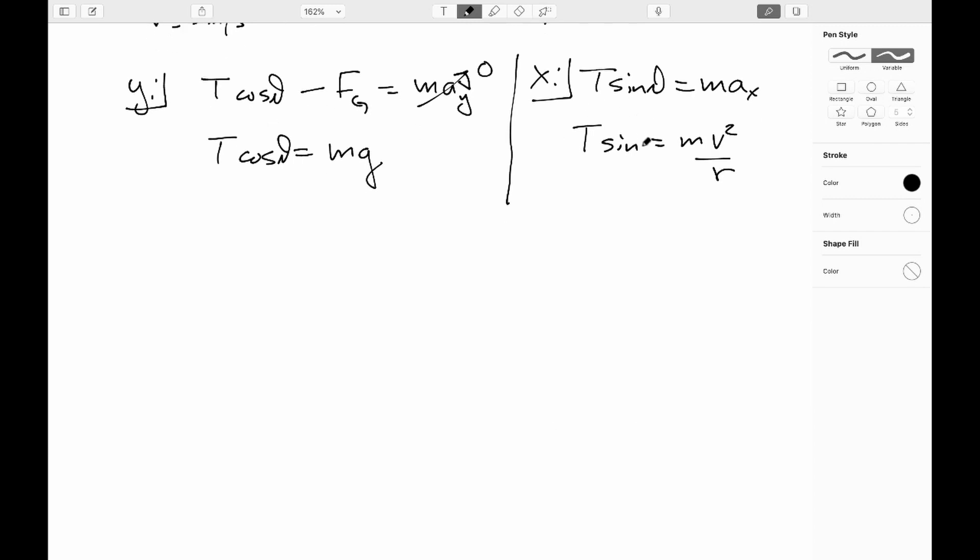So our goal is to find the angle but we have this unknown of the tension. Just to show you another trick, just like before when I subtracted equations, here you can divide the equations. So you can say t sine theta on the left would be equal to mv squared over r on the right. If I divide the left by t cosine theta as long as I divide the right by mg, the t's cancel and it turns out it doesn't matter how massive my stopper is. Sine over cosine is tangent.